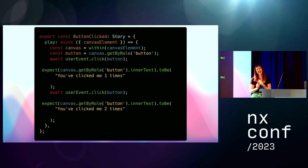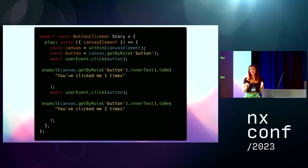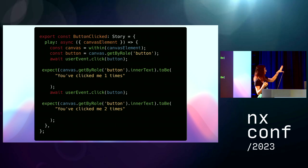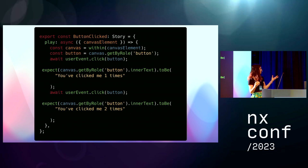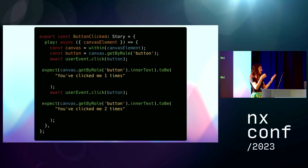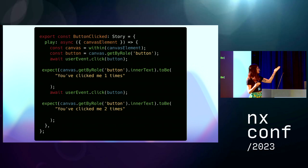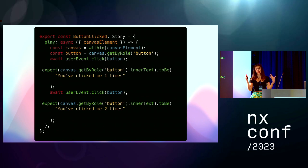This is an example of a play function of the button being clicked. As you can see, you have the play function, and you have your canvas, which is your DOM. You have the button, which you can get using canvas.getByRole. You do userEvent.click on the button, as you usually do with Testing Library — it's the familiar syntax. And then you just expect the button's inner text to be a certain value. So it's just writing an entry test, but it's inside your story, your already existing story.